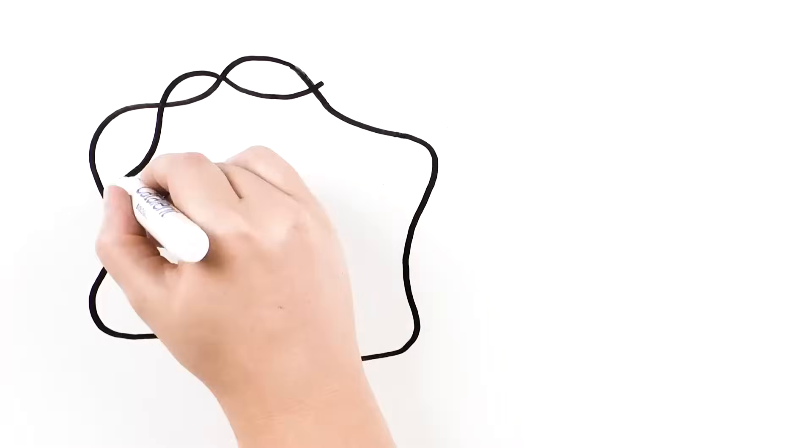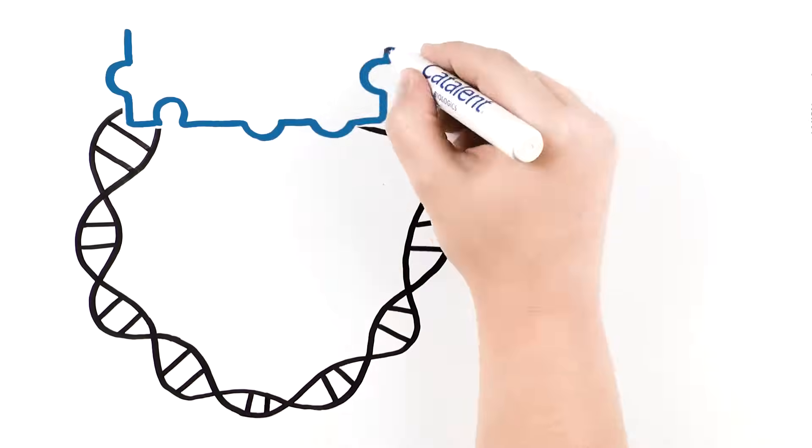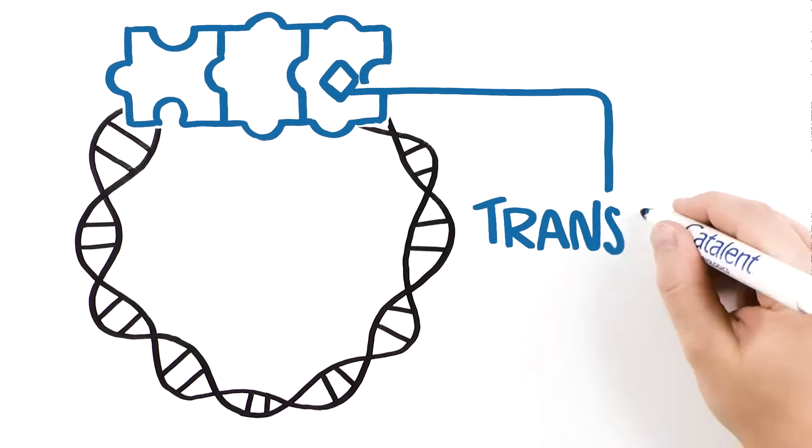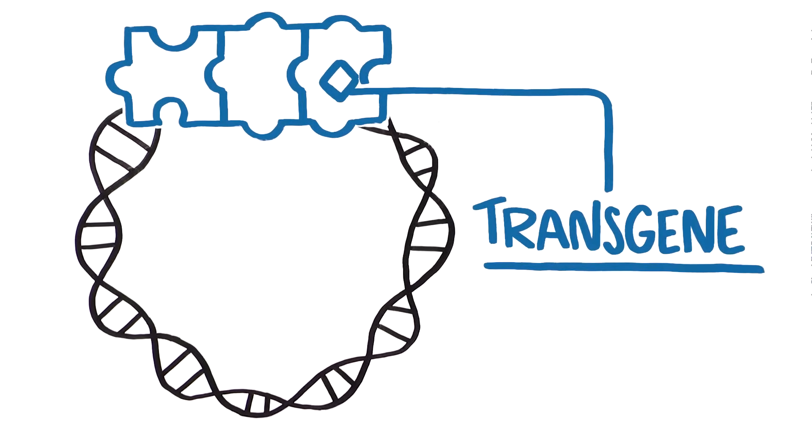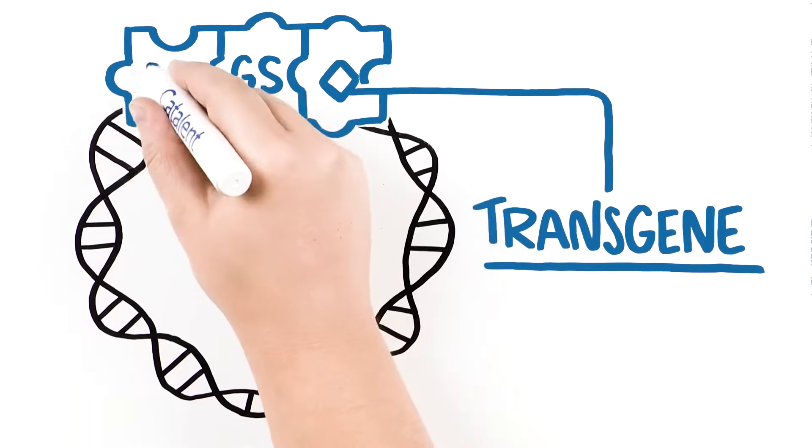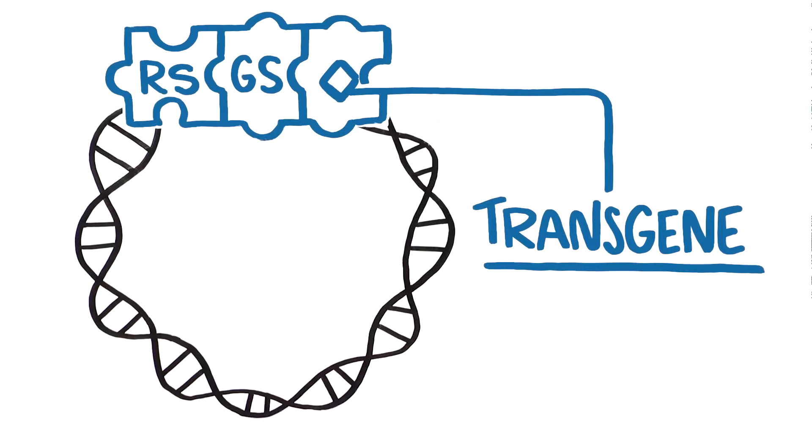To generate a new protein-expressing cell line, the transgene of interest is added into an expression plasmid, containing glutamine synthetase and a recombinase recognition sequence.